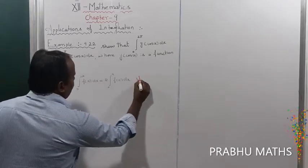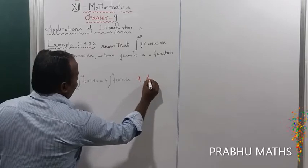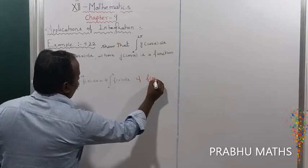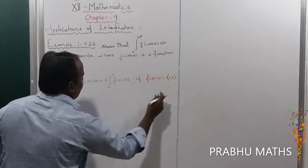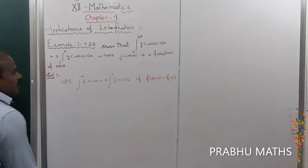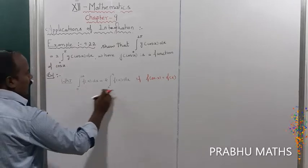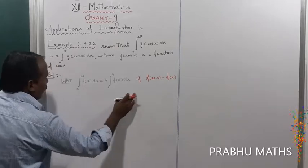That formula is satisfied when f(2a - x) is equal to f(x). That condition must be satisfied for this formula to be fully applied.